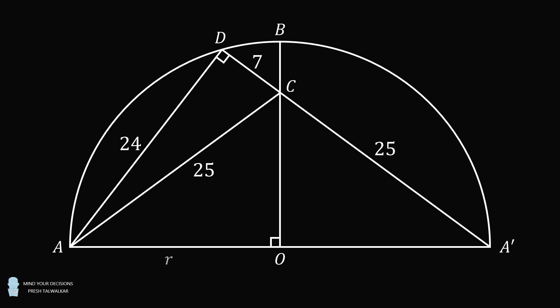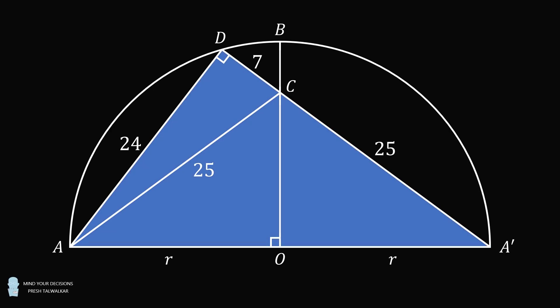Now, let the radius of the circle be equal to R. Then consider the right triangle ADA'. One leg is equal to 24. And the other leg is equal to 7 plus 25, which is equal to 32. And the hypotenuse is equal to 2R.